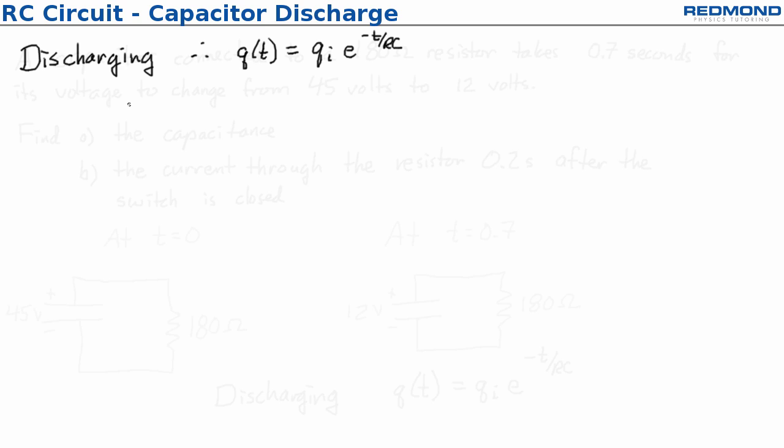For a capacitor the charge is equal to the capacitance times the voltage and I can rewrite that to get the voltage is equal to q over C. So if I rewrite that equation for discharging the capacitor I can get q as a function of time over C is equal to q initial over C times e to the negative t over RC.